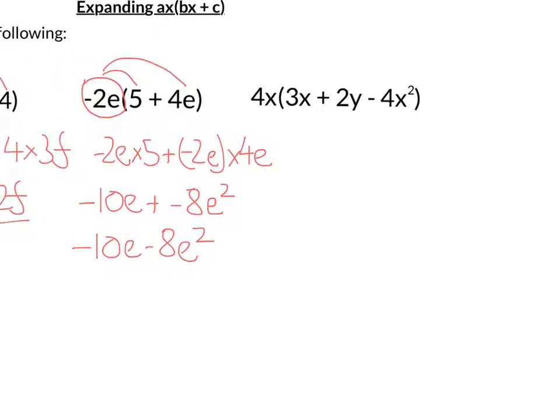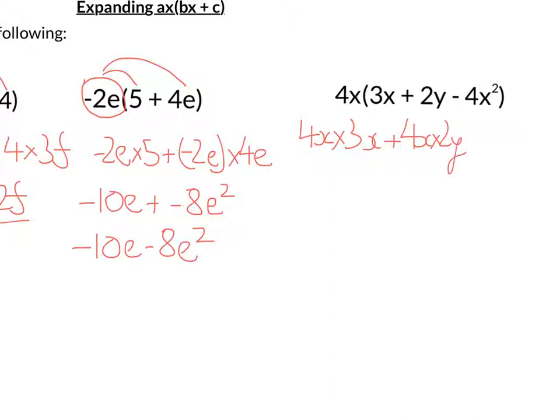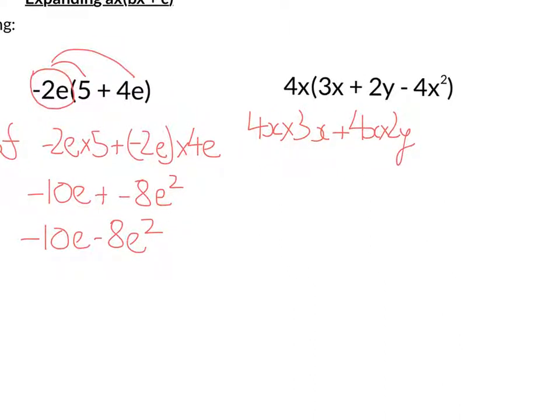So let's look at this last one here, where we've got three terms inside the bracket, but it's still the same. So we're going to get 4x times 3x plus 4x times 2y. And lastly on there, we've got plus 4x times negative 4x squared. Put that in a bracket. So 4x times 3x, well, 4 times 3 is 12. x times x is x squared.